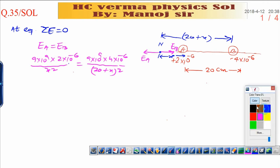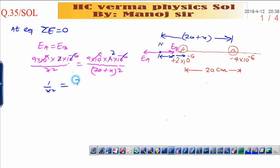Now this will cancel out. 10⁻⁶ and 10⁻⁶ will cancel out, and 2 will cancel out with 4. It will be 1/x² equals 2/(20 + x)².